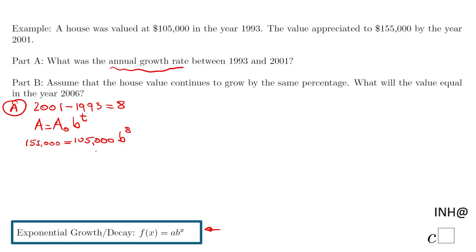To find b, first I'll divide by 105,000. These two cancel out. You can cancel the three zeros to make the math easier, then just divide 155 by 105 in your calculator.